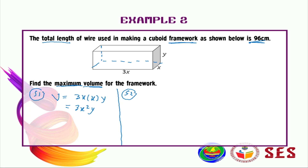So the keyboard framework looks like this. The 96 centimeters accounts for all the edges. Along the length direction you have four edges of 3x each. Along the width direction you have four edges of x each. For the height you have four edges of y. So all these lines together total 96 centimeters.